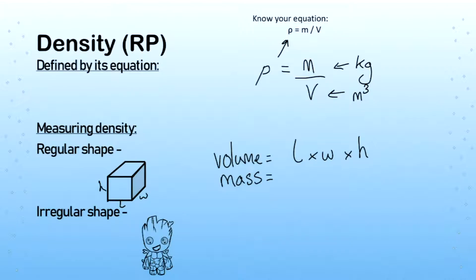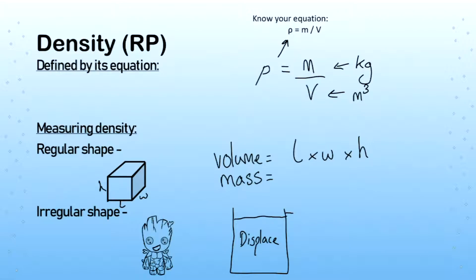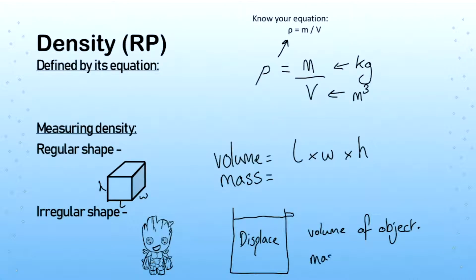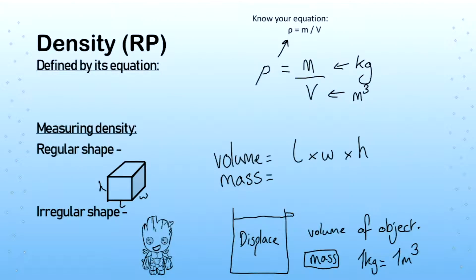For an irregular shape, we can't measure volume by taking length, width and height measurements. So we use the idea of displacement — we put the object in a body of water and displace the excess water. That displaced water is equal to the volume of our object. We can measure the mass of the water displaced, knowing that one kilogram of water equals one metre cubed, allowing a direct conversion. This is a common six-mark question requiring you to describe the calculation too.